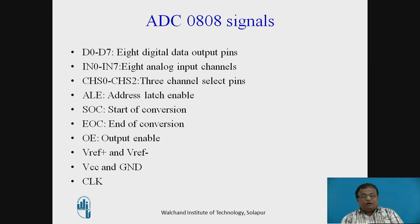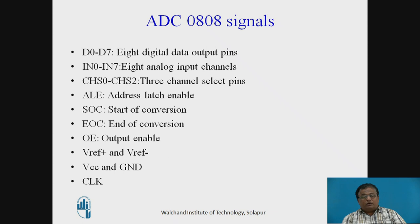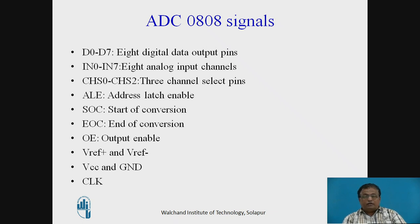V reference plus and V reference minus are the two reference voltages. For example, if V reference plus is connected to +5V and V reference minus is connected to ground, then for a zero volt input the ADC will produce 00 as output, and for +5V the ADC will produce FF as digital output. VCC and ground are the required power supply pins, and the clock is the input signal required for the ADC; all internal operations are synchronized with this clock.